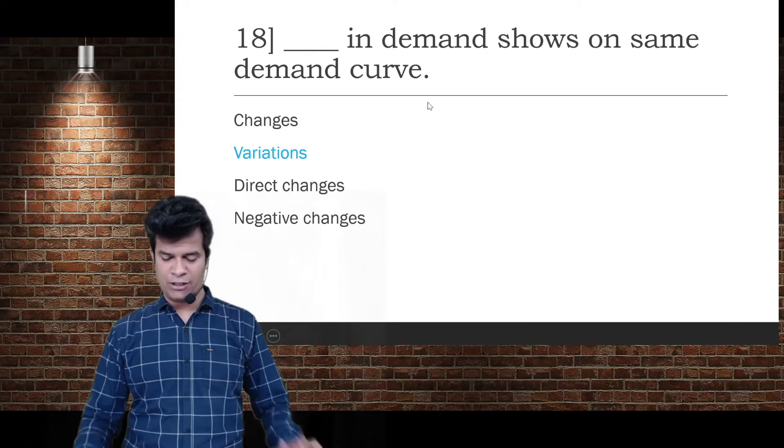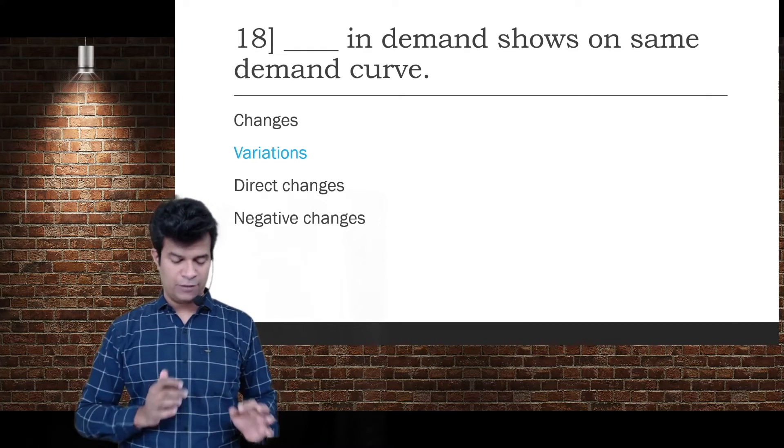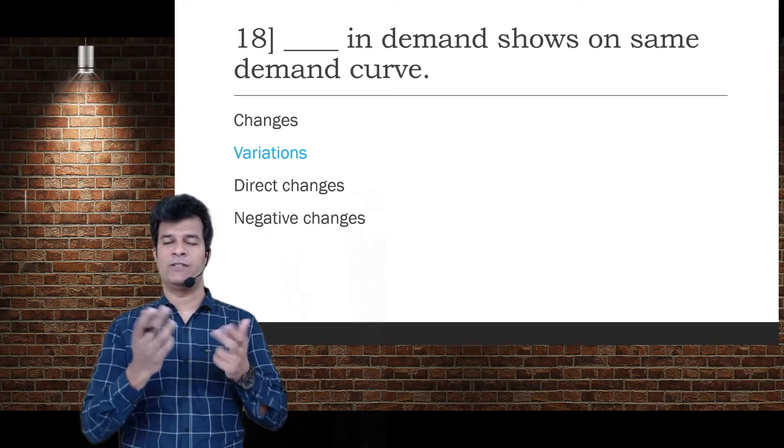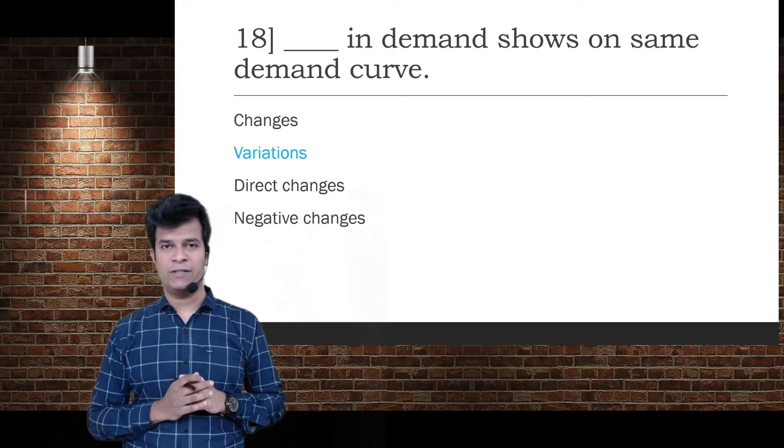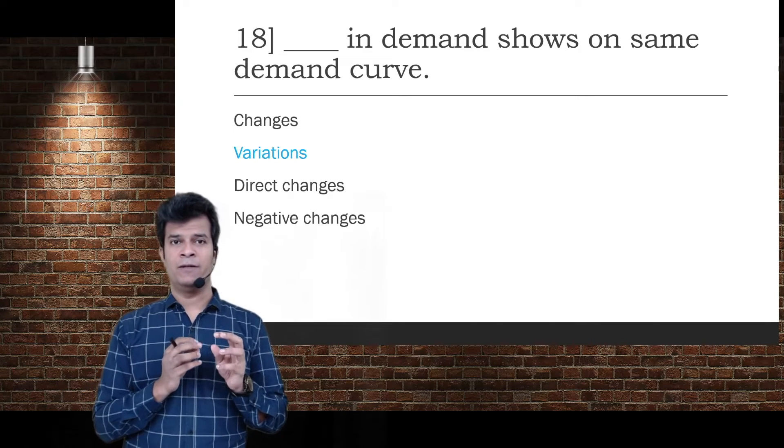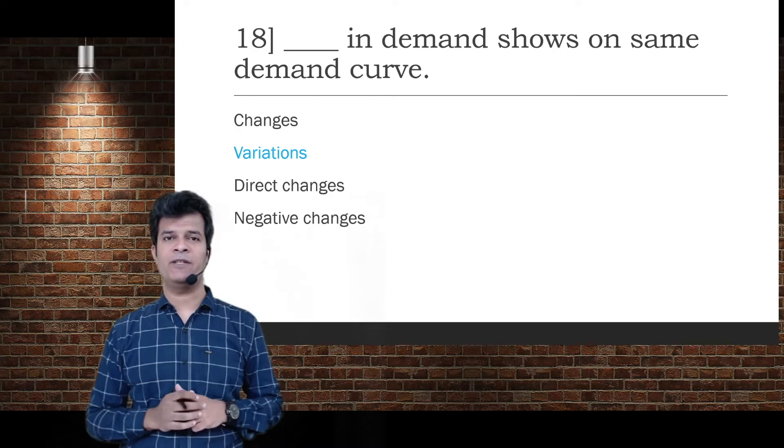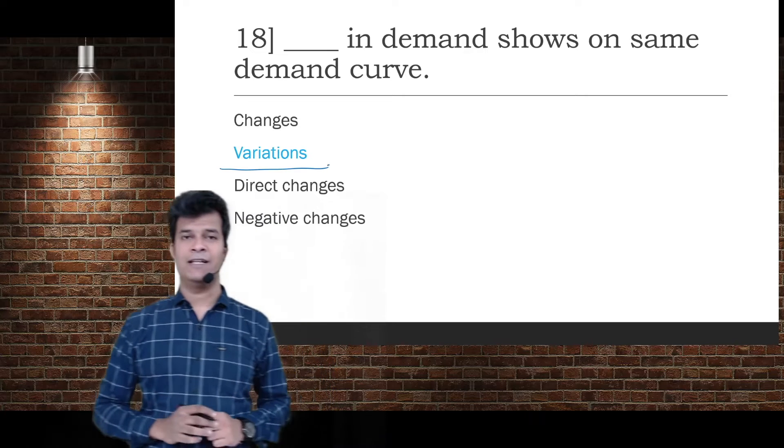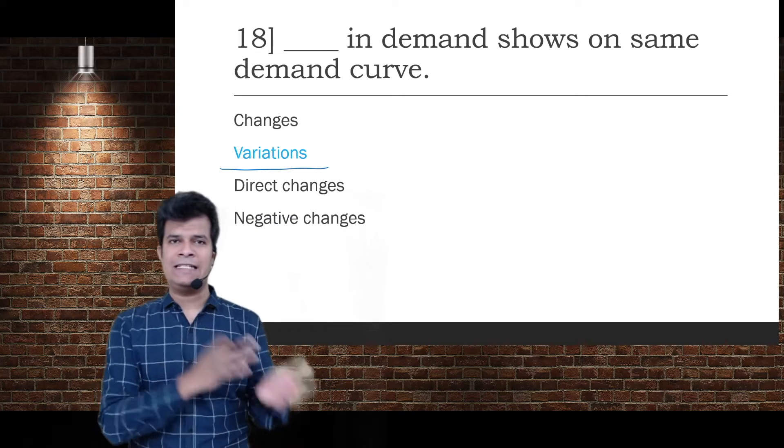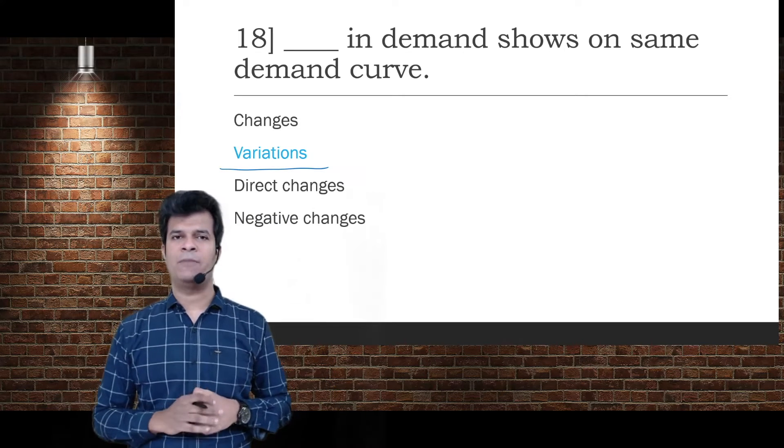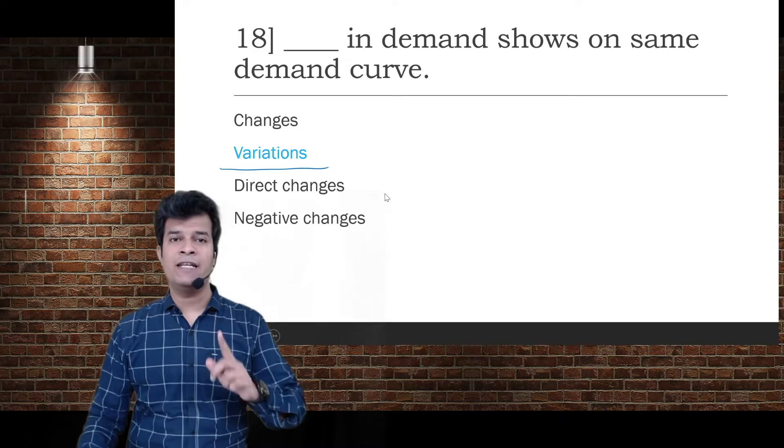Variations in demand show on the same demand curve. There are two types: variations and changes. In variations, whether demand is increasing or decreasing, you can show both things on the same diagram. But changes - increase and decrease - you cannot show on the same diagram.